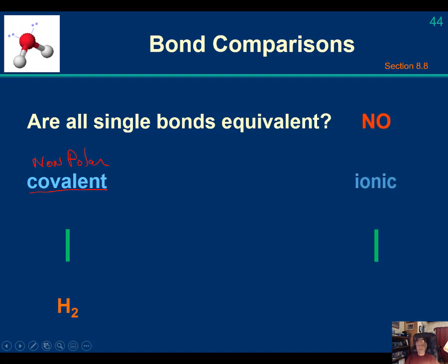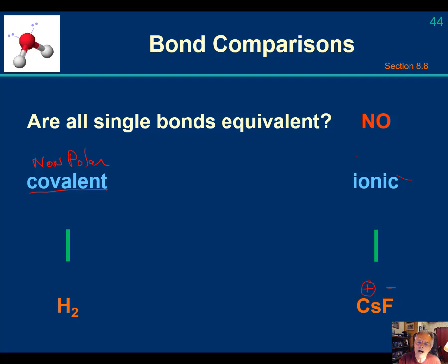At the other end of the spectrum we have completely ionic bonds — something like cesium fluoride. You've got a metal cesium ion with a plus-one charge and a fluoride ion with a full negative charge. Fluorine is the most electronegative element on the periodic table; it's clinging to that extra electron it effectively took from cesium. Cesium only exists as a plus-one cation in ionic compounds. This is a completely ionic bond.